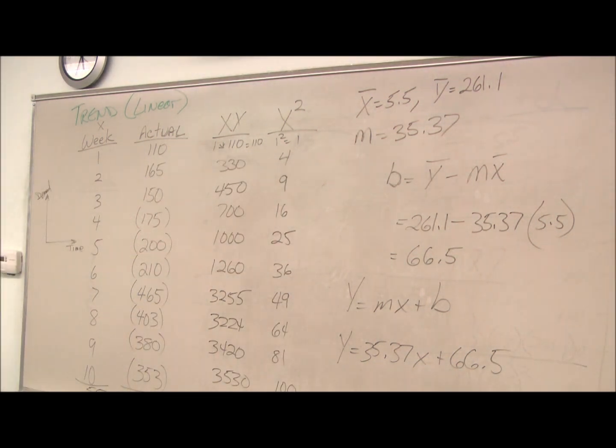So now we have the equation, we have our slope, we have our intercept. This is my b right here, is my intercept, where it's crossing the demand axis. The m gives me the slope of that line.